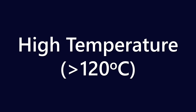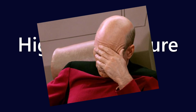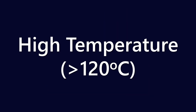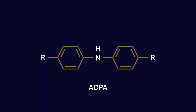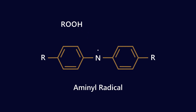Some might say radically different. Let's start with the ADPA molecule again. The initial steps are exactly the same: we encounter a peroxy radical, it gets neutralized, and we form an amino radical — one radical neutralized. Then another peroxy radical comes along, and we create what's called a nitoxyl radical. This is where we start to get into some differences.